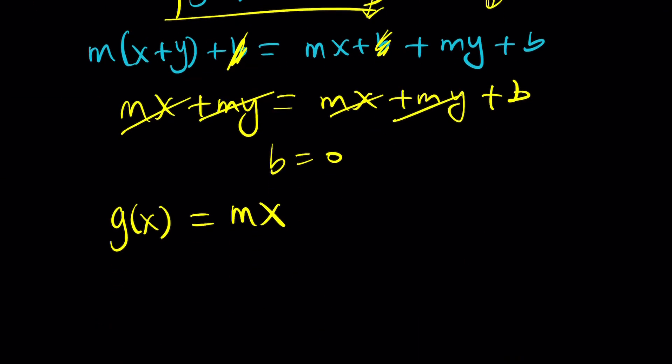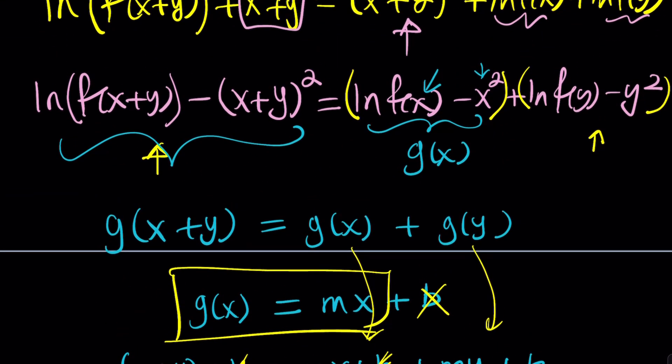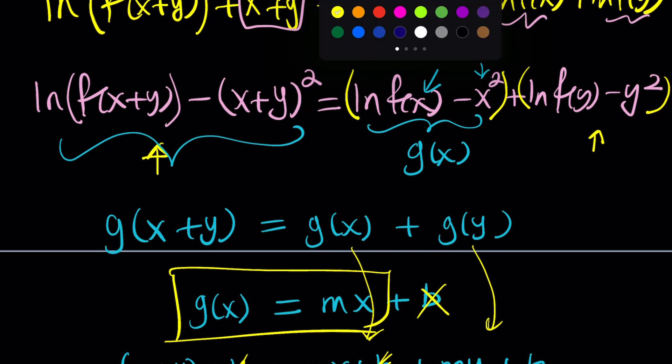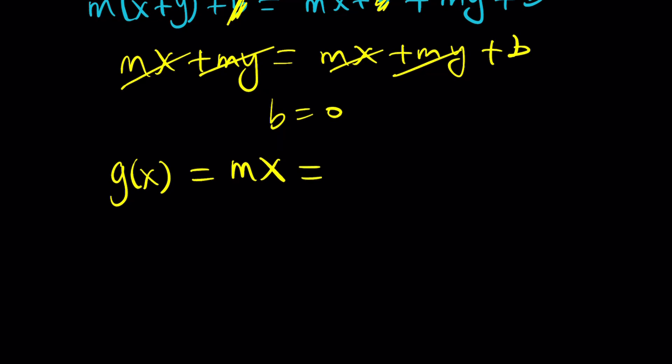So what does this mean? Well, we got g of x. We should be able to get f of x from here because we have this beautiful relationship. What if we call g of x ln f of x minus x squared. Set it equal to ln f of x minus x squared. And then we're going to go ahead and add x squared to both sides. ln f of x equals x squared plus mx.